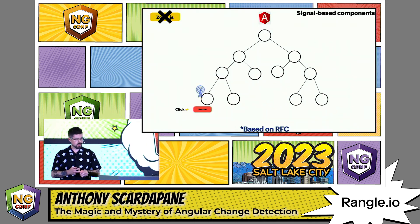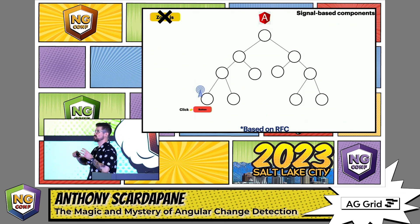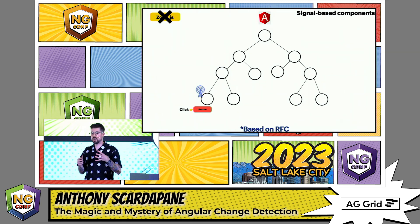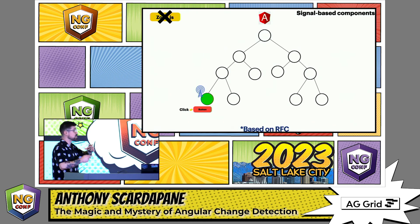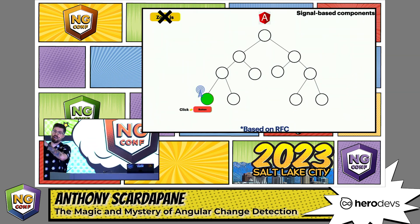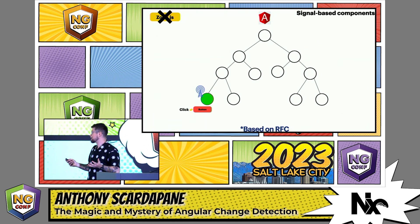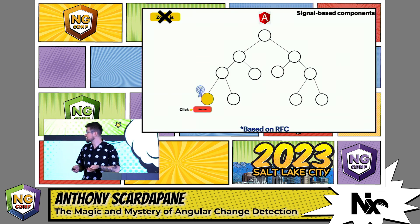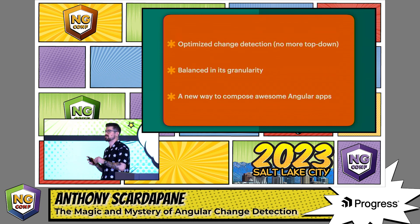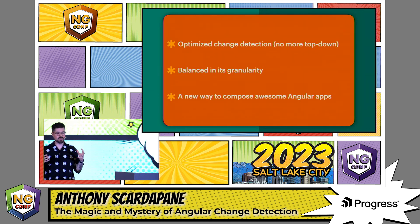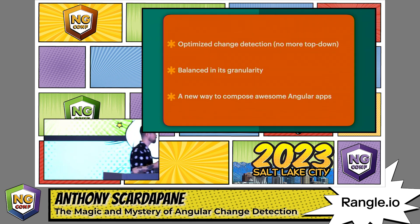Let's look at an example of signal-based components. When we click the button in the child node, a new signal value is set and the template is reading that new signal value. Angular knows about this and says: 'We no longer have to start at the top anymore — I just know that this component has to be updated.' So we went from checking the whole tree, to checking just the path with onPush components, and now only the component where the signal is read. It's an optimized change detection strategy — no more top-down checking. The RFC mentioned it's going to potentially be component or view-based, balancing granularity while being much more efficient. It's a really cool way to compose Angular apps.